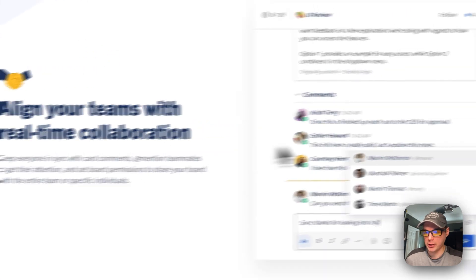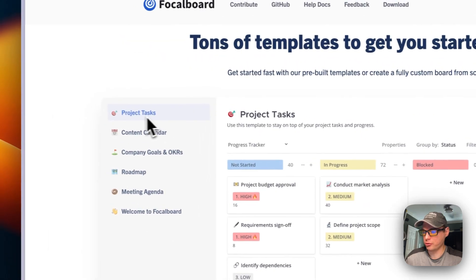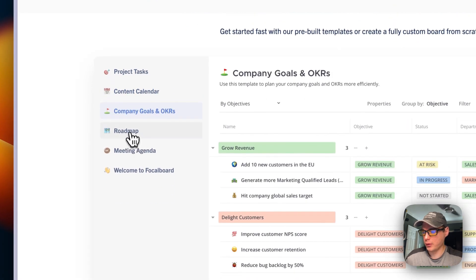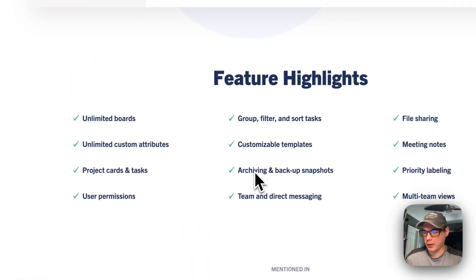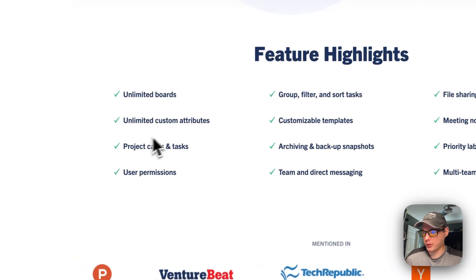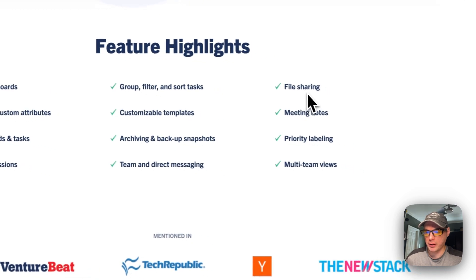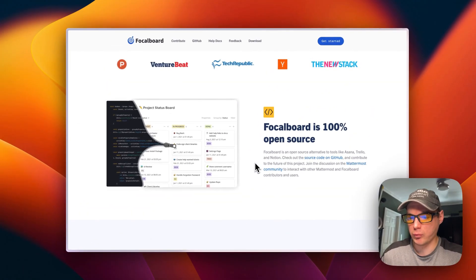It supports real-time collaboration and has lots of templates: project tasks, a content calendar, company goals, a roadmap, a meeting agenda, and a welcome board. Features include unlimited boards, unlimited custom attributes, project cards and tasks, user permissions, group filter sort, task customizable templates, archiving and backup snapshots, team and direct messaging, file sharing, meeting notes, priority labeling, and multi-team views.